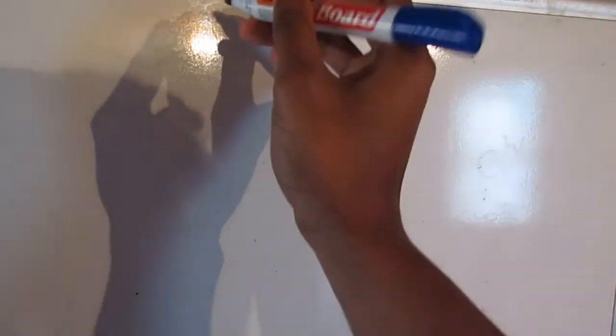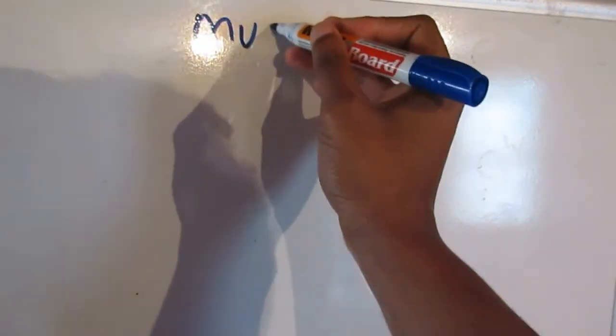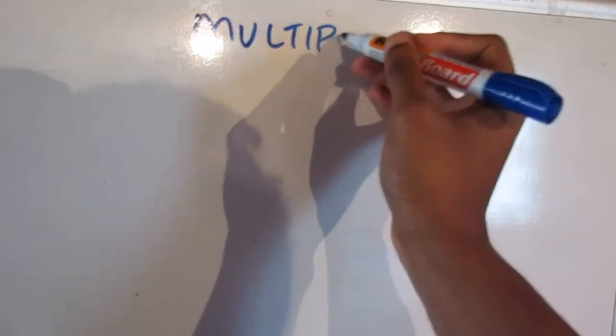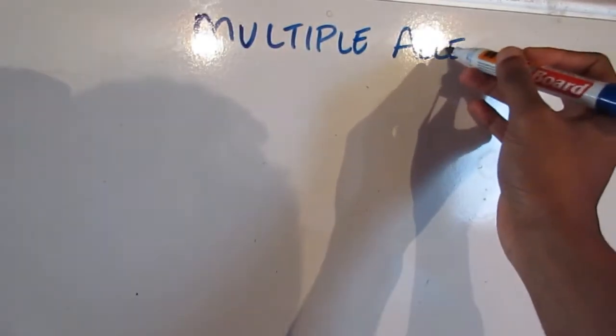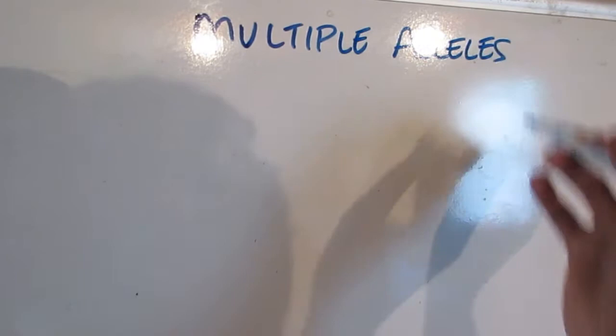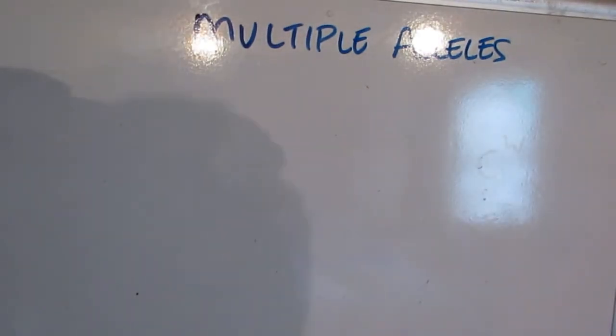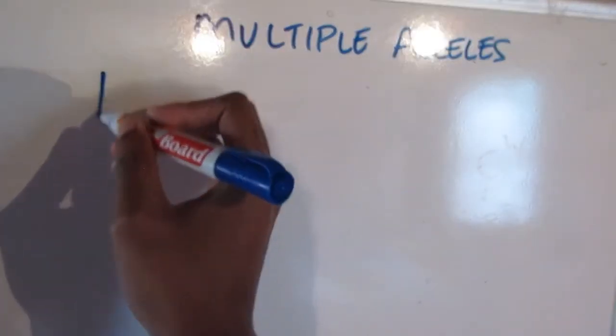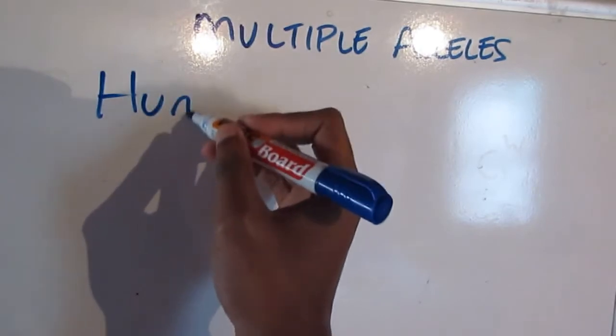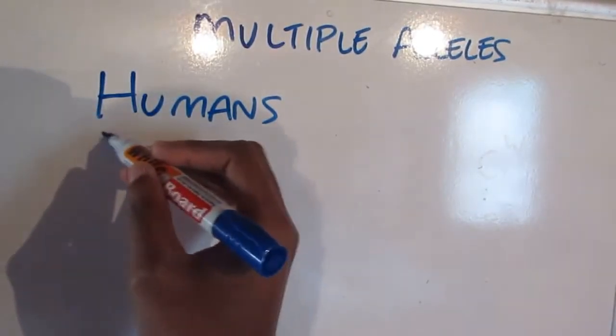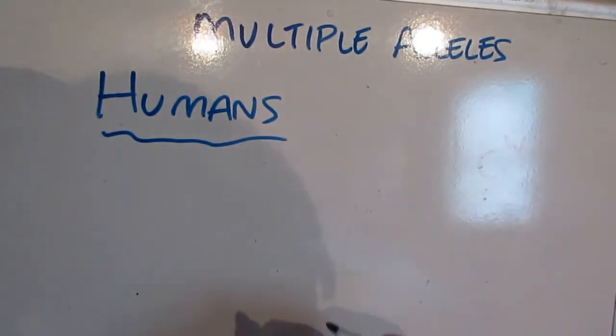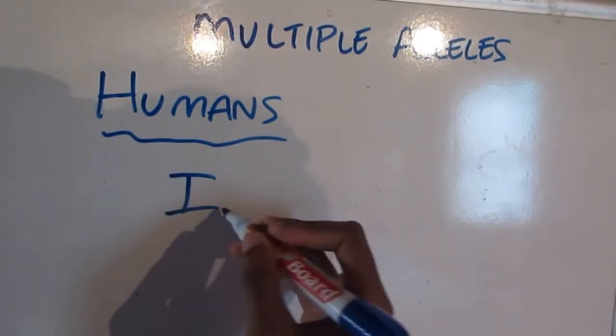Now in humans, this co-dominance is very important. And it introduces a new concept called multiple alleles. So typically when you've been studying inheritance, you'll look at two alleles for one gene. In this case now, we're going to look at three alleles for one gene.